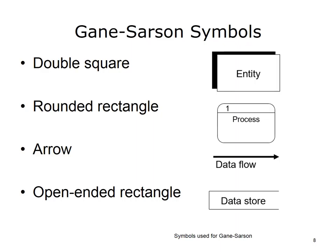Gane-Sarson data flow diagram notation uses four symbols. Entities show the people, roles, organizations, or other things with which the system communicates — i.e., sources or consumers of data.